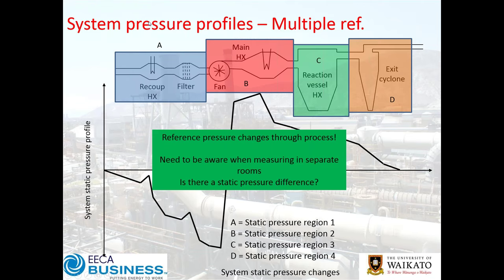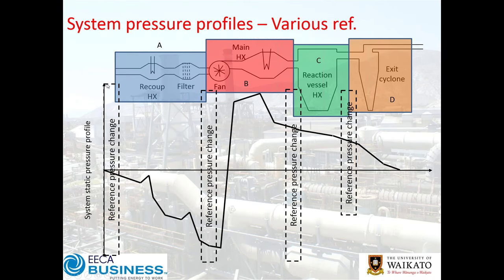You can have multiple zones — A, B, C, D — where cyclones might be a hazardous sealed-off area at a different pressure to the reaction building versus air heating and treatment zones. Each zone has a different static pressure. Depending on industry, internally they're generally kept under positive pressure — though not always. When going from zone to zone, you've got a shift in your reference pressure frame.